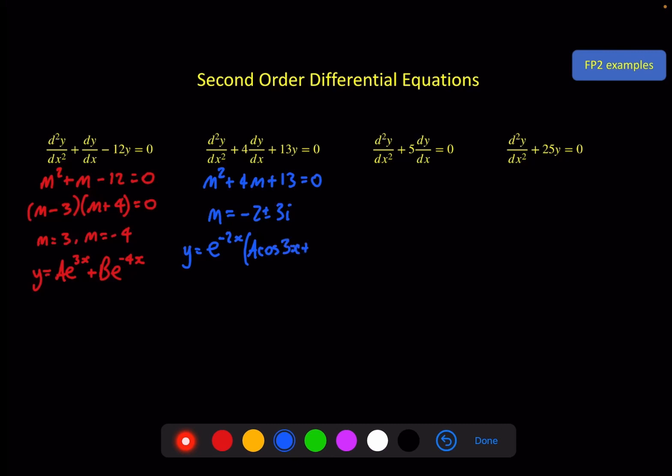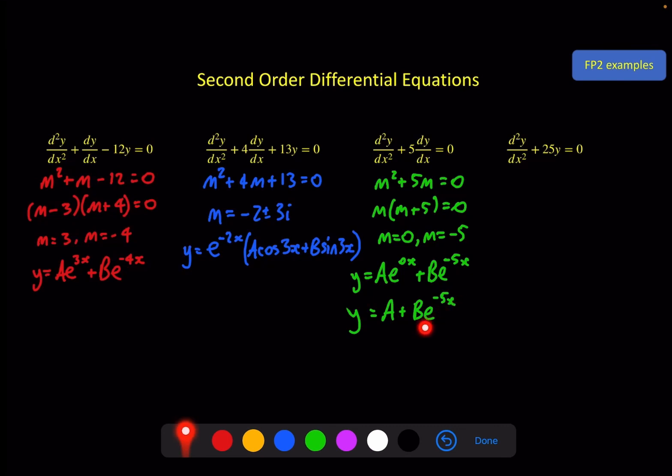Next one we've got m² + 5m = 0, which factorizes quite nicely to give m = 0, m = -5, two real solutions. So we're back to Ae^(αx) where α is 0, plus Be^(βx) where β is -5, and obviously e^0 is 1 so that simplifies to y = A + Be^(-5x). Worth noting here that you can have a single exponential function but that's a specific result, not a general result.